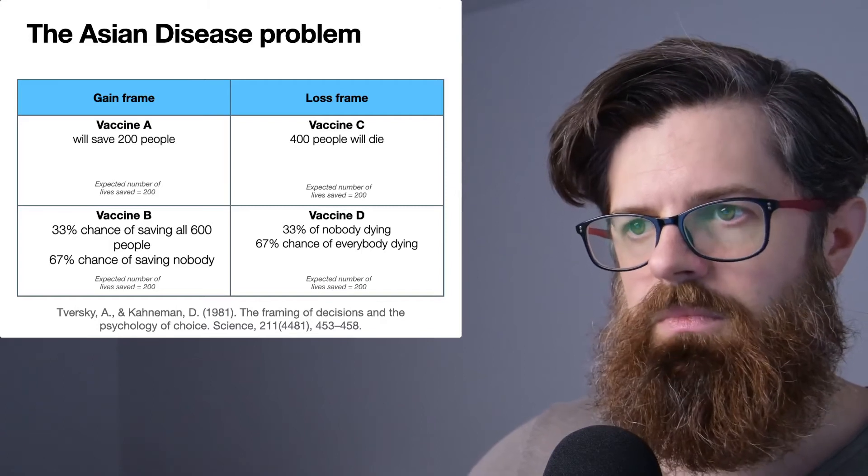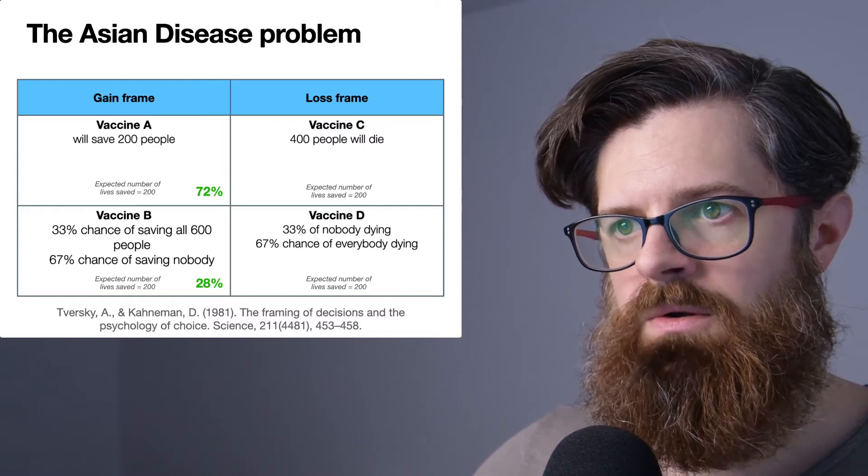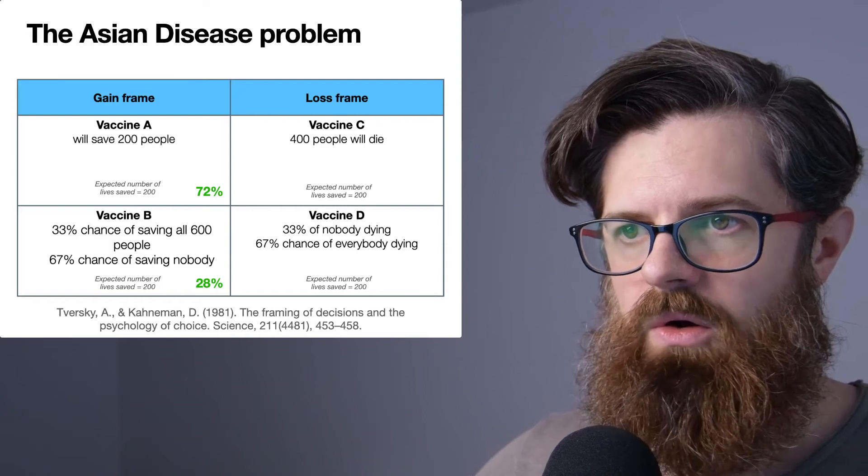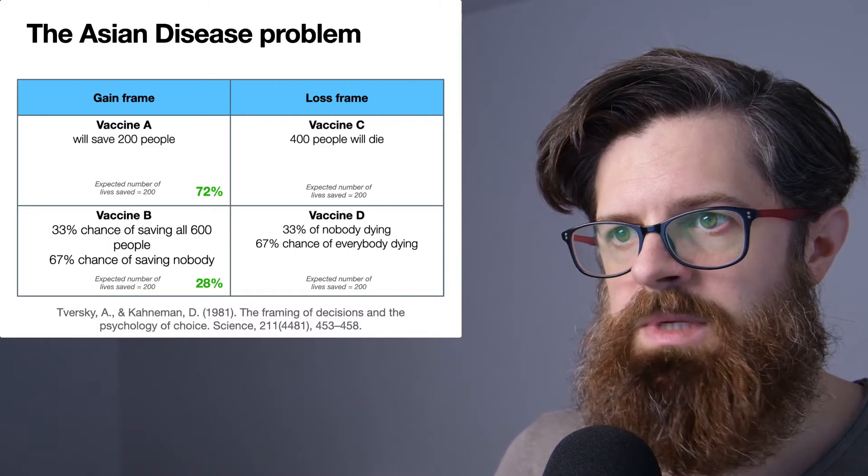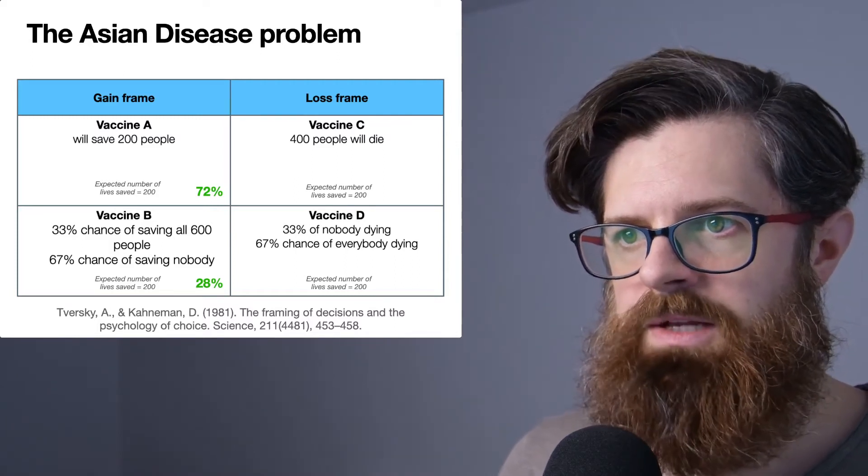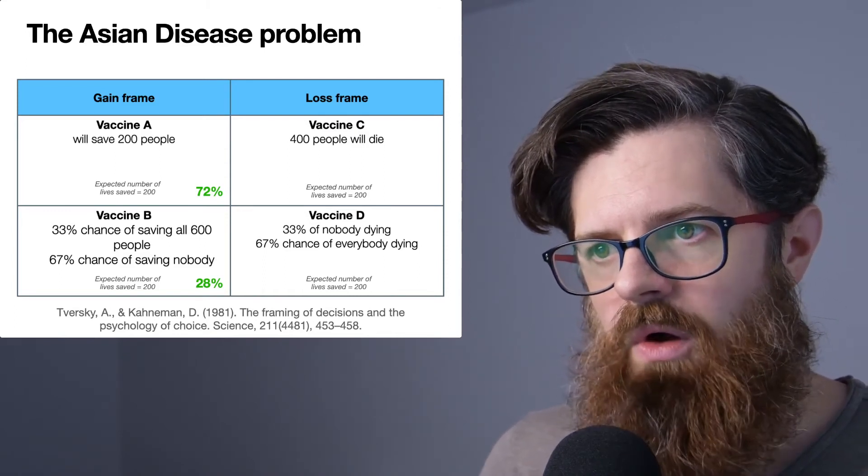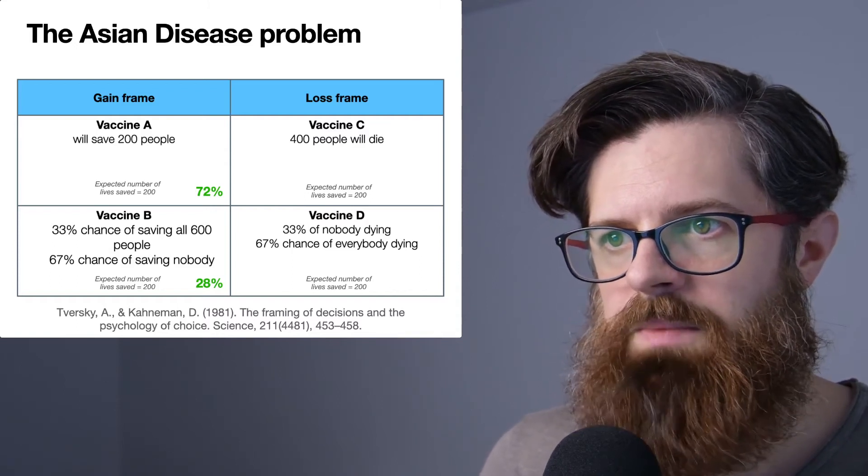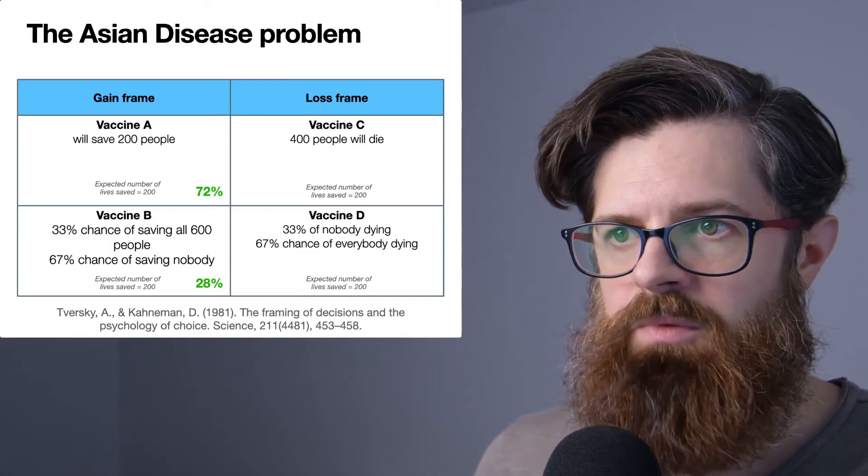Let's have a look at the proportion of people who chose each option. It turns out that in this experiment by Tversky and Kahneman, 72% of the participants chose Vaccine A and only 28% of people chose Vaccine B. This might be confusing from an expected value theory perspective because the number of lives saved is 200.